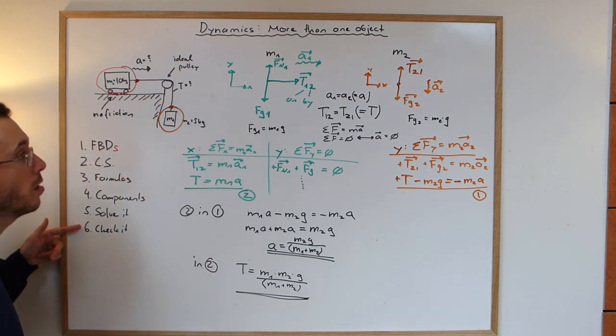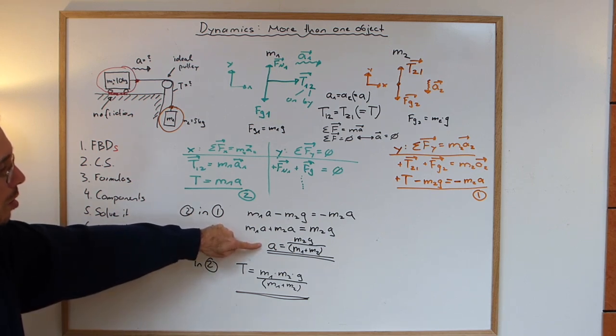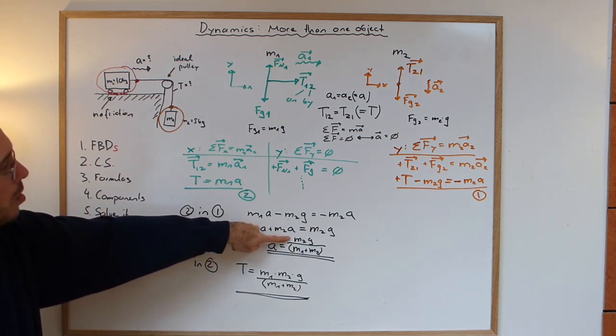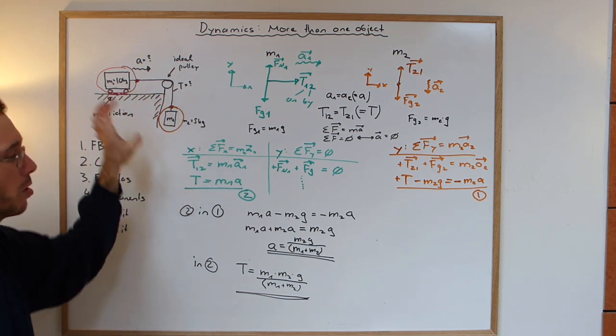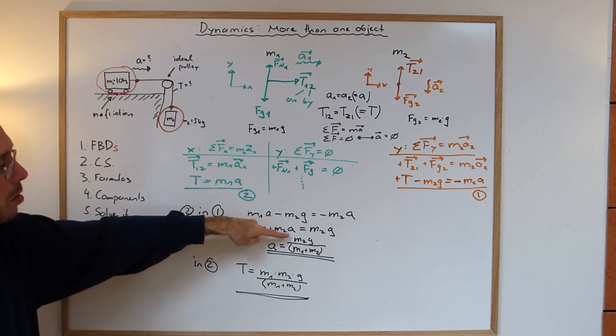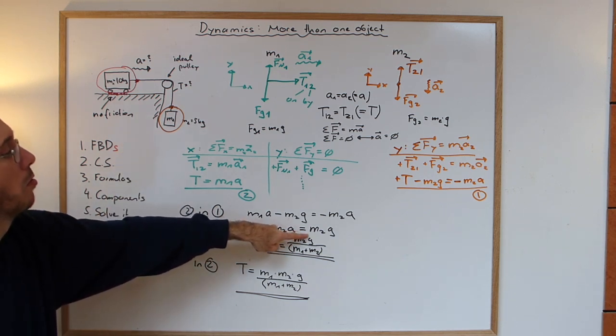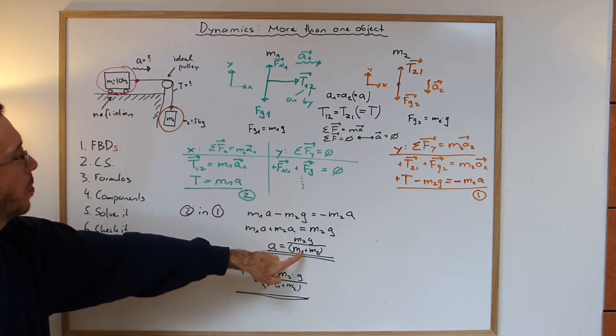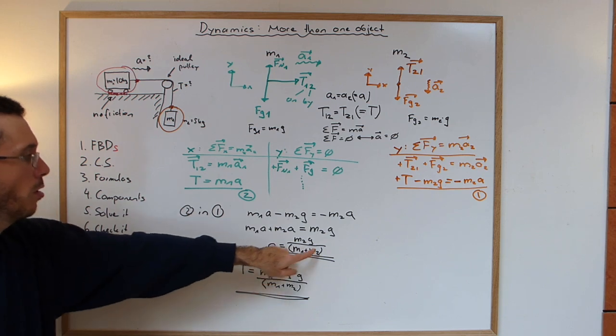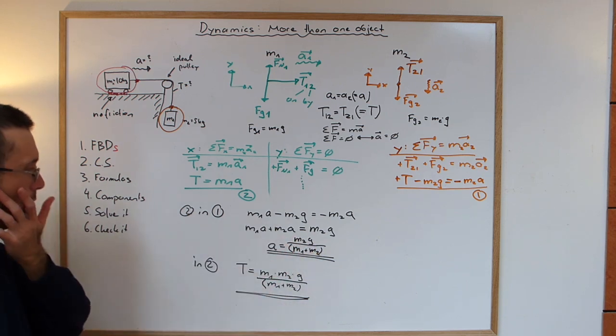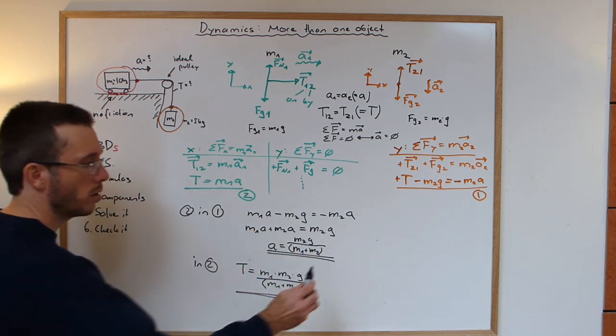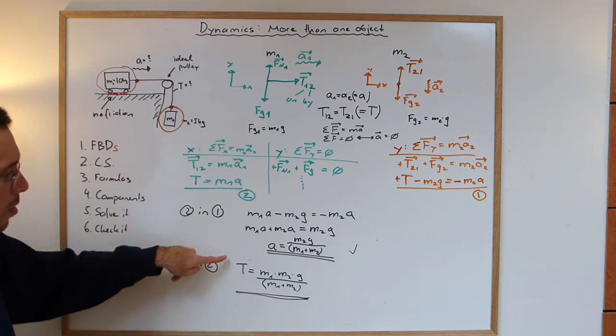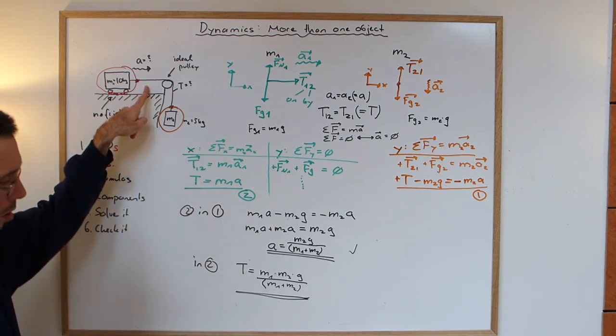So last step, check it, does it make sense? So if I look at my acceleration, my acceleration increases the more mass I'm having hanging here. If you think about it, that makes sense. The more mass I have, this is the driving force. This is what accelerates my system. So that seems to make sense, depends on gravitational constant. And then divide it by the total mass of the system. This is the inertia of the system. The total inertia that I need to accelerate. So the bigger the inertia, the lower my acceleration. So this one seems to make sense.